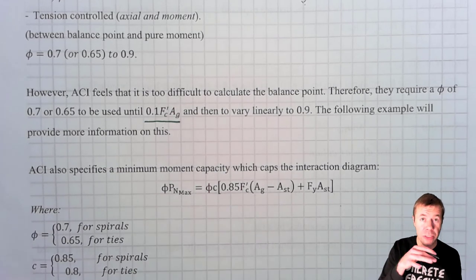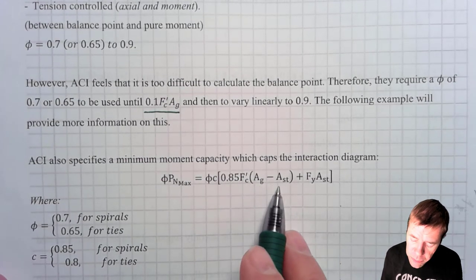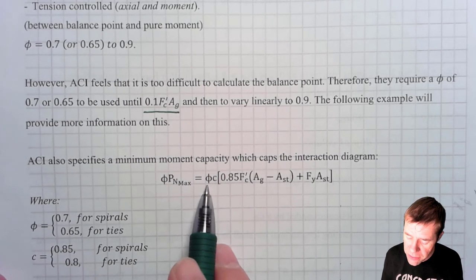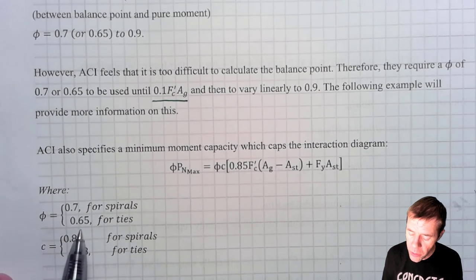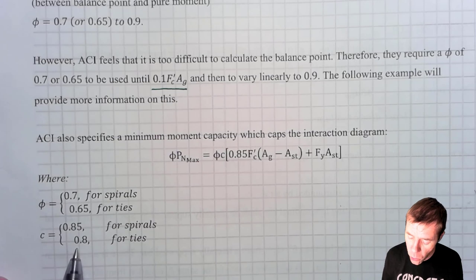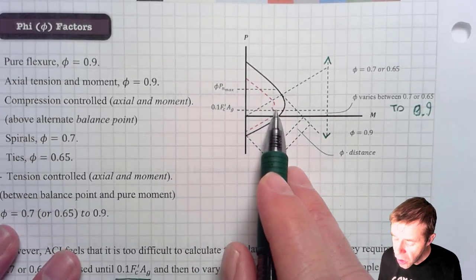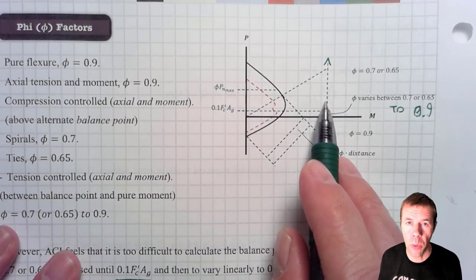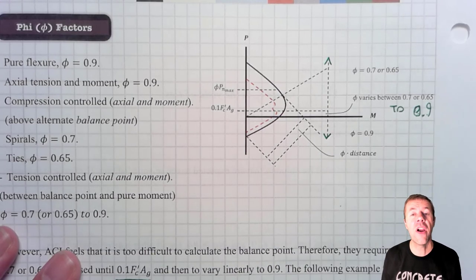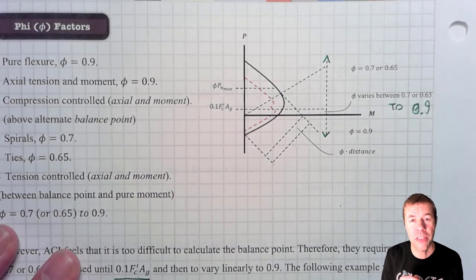Now, ACI also does a cap. Remember that eccentricity thing I was telling you about before, the thing that's gone? This is what they replaced it with. They have a cap. They take 0.85 times f prime c times area of gross minus area of steel, plus the yield strength of the area of steel. We'll talk more about this in a problem coming up. And they're going to multiply all of that by c and phi. Now, phi is 0.7 or 0.65. 0.7 for spirals, 0.65 for ties. Same thing that we've always used. And c is going to be 0.85 for spirals or 0.8 for ties. That is a mouthful. But again, it goes back to this interaction diagram. And then this is what the phis are going to look like on the inside. Something like this. Everything above this, what is it? 0.7 or 0.65. Everything below this, what is it? 0.9. Everything in between these two points, what is it? It varies linearly from 0.7 or 0.65 at this point to 0.9 at this point. It will make more sense when we work an example problem. And that's next.